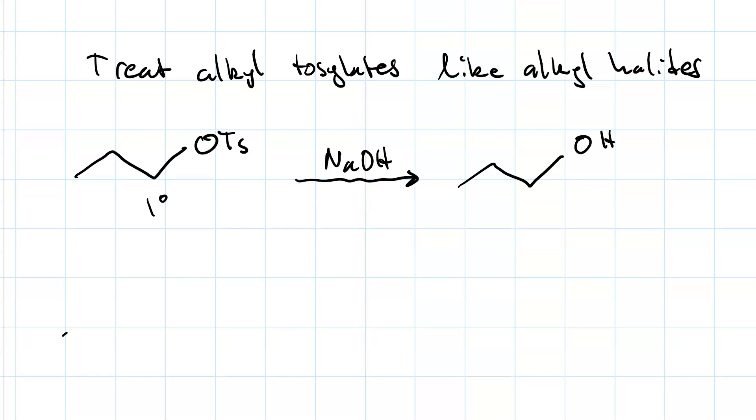A secondary alkyl tosylate, treated with sodium hydroxide, and we'll get some E2 product and some SN2 product. And if this were a wedge, then the alcohol form would be on a dash.